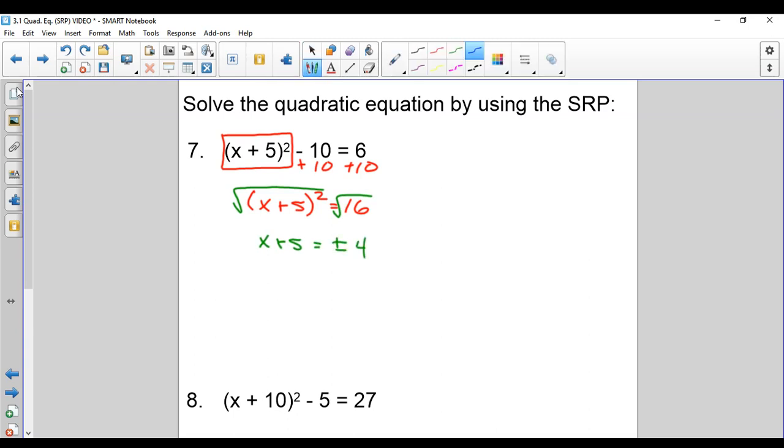You get X plus 5 equals plus or minus 4. Don't forget the plus or minus. That's going to be something many of us forget, so just watch yourself. Get X by itself. We get negative 5 plus or minus 4.